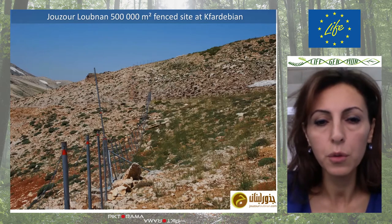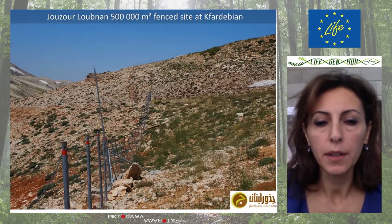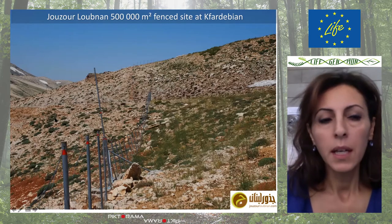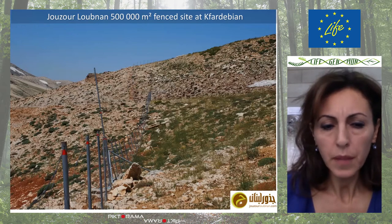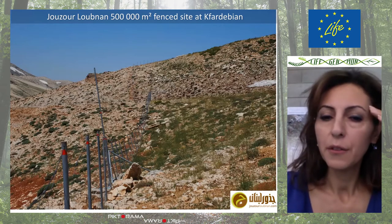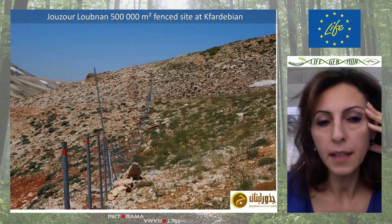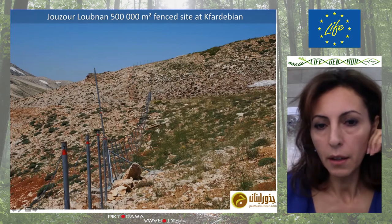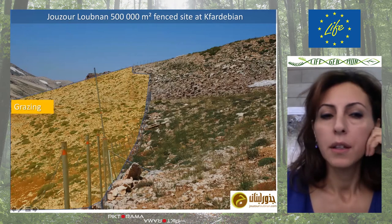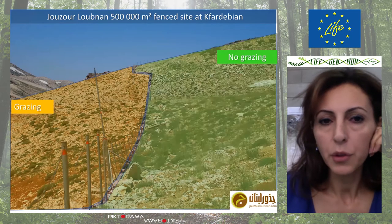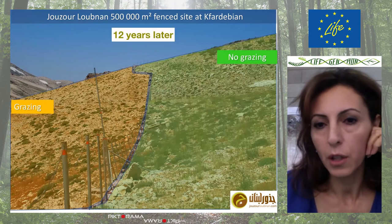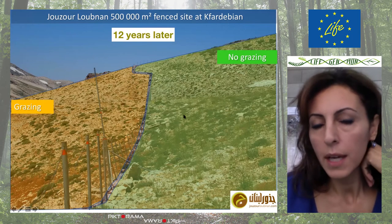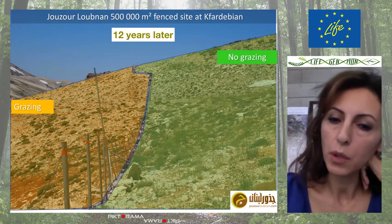Here we have in front of you a site: on your left is a grazed area, a degraded ecosystem that is supposed to be a forest. Due to historical deforestation coupled with grazing over tens of years, we found an area of more than 500 square meters and after 12 years, as you can see, it doesn't evolve much — no trees, no complex ecosystem.